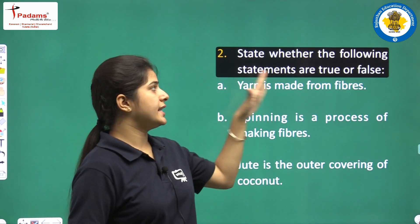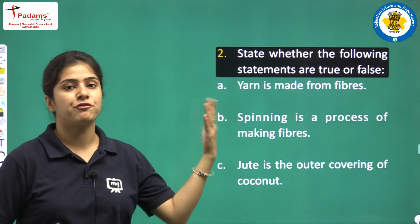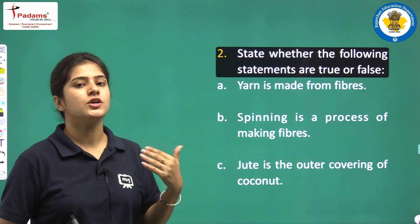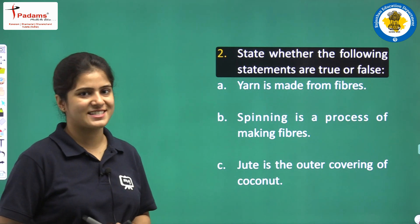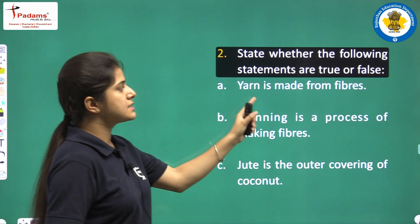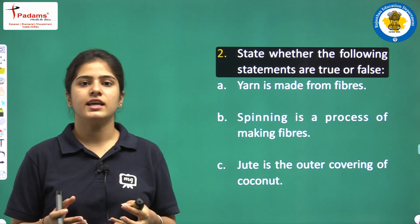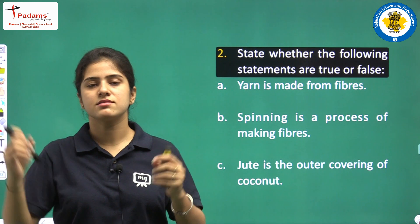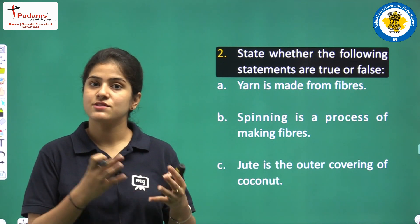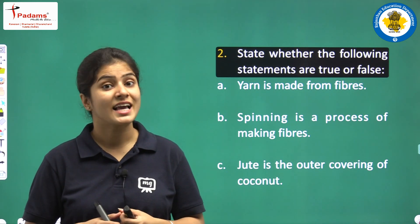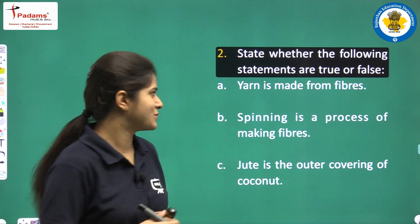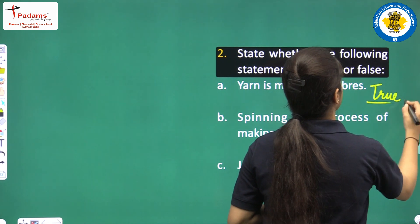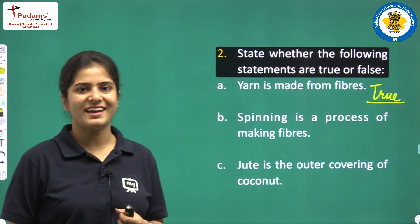Next, state whether the following statements are true or false. First statement: Yarn is made from fibers. We get yarns from fibers — is this true? Yes, it is absolutely true. So this statement is true.